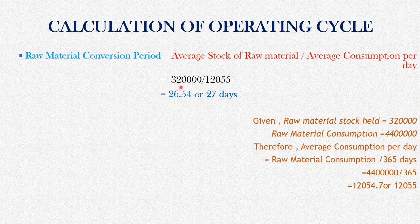Raw material conversion period equals Rs. 3,20,000 divided by Rs. 12,055, which comes to approximately 27 days.